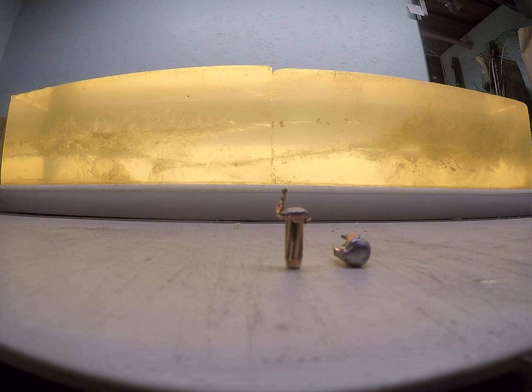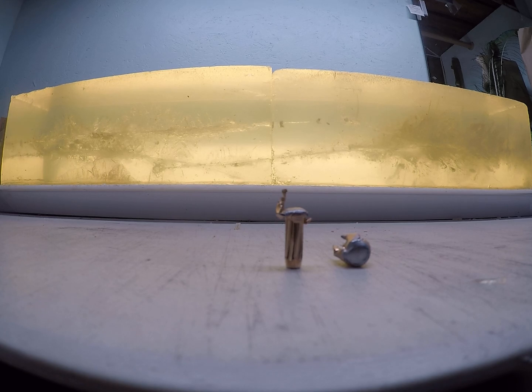My low velocity load was going just over 1,600 feet per second and had a retained weight of 129.7 grains. My high velocity load was going to hit the gel at just over 2,700 feet per second with a retained weight of 79.2 grains.